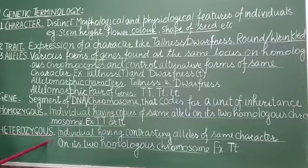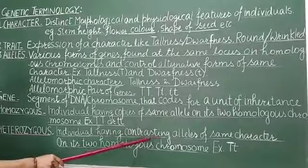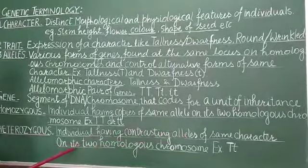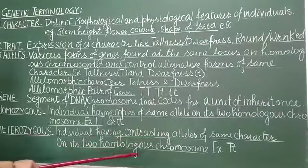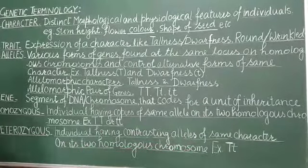Heterozygous individuals are the individuals having contrasting allele of same character on its two homologous chromosomes. For example, capital T, small t.